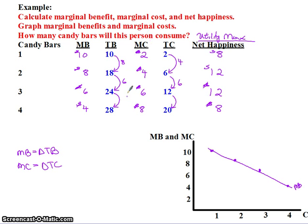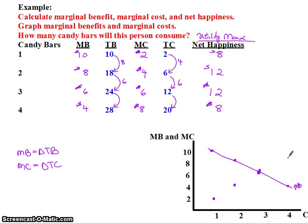Now graph the marginal costs. Candy bar number one, marginal cost was $2 — graph it. Candy bar number two, marginal cost was $4 — graph it. Candy bar number three, marginal cost was $6 — graph it. And finally candy bar number four, marginal cost was $8 — graph it. Connect the dots. There's my marginal cost curve.